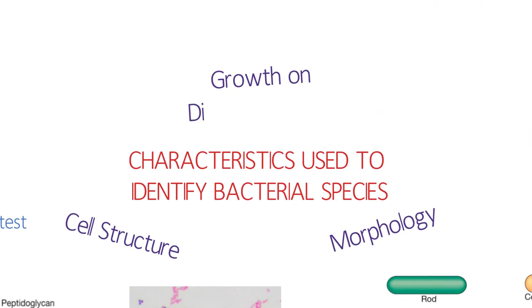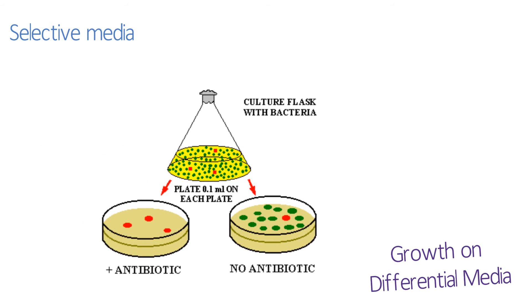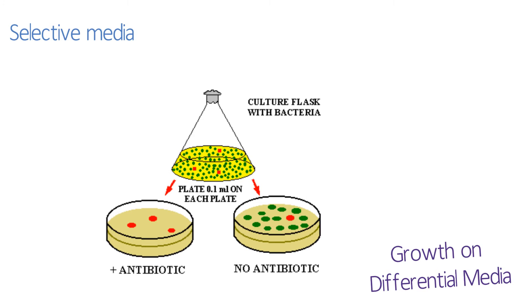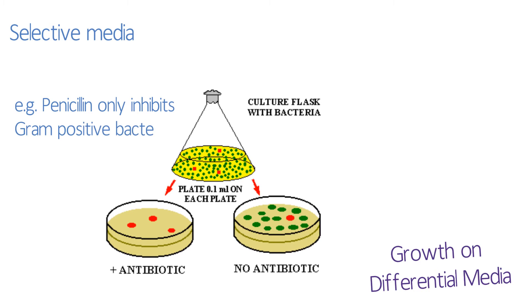Growth on differential media. You can grow bacteria on different types of media and this can help you work out which enzymes they contain. For example, you could add antibiotics to a media to select for different types of bacteria. Penicillin inhibits the growth of gram-positive bacteria, so if you get any growth on a plate containing penicillin, you know that you can't be dealing with a gram-positive species.